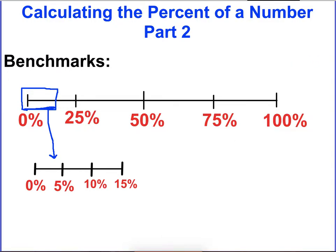So benchmarks are going to be things that are easier for us to think of. Certain benchmarks like 0% of anything would be 0, 100% of a number would be the number itself, 50% would be half, and from that 50% I can either cut the number in half to find 25%, or I can cut the number in half and then add it to 50 to get to 75. So these are ones that are more common and easier to calculate.